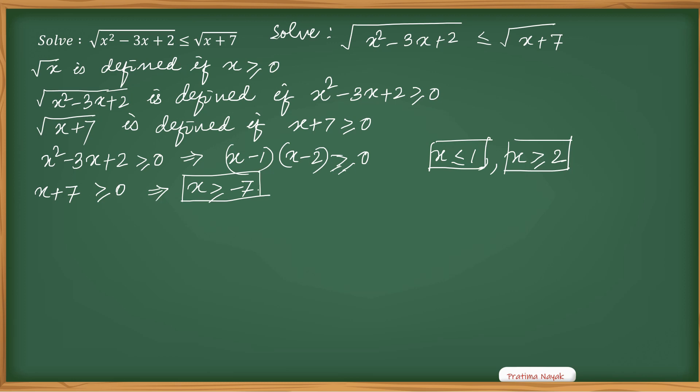Now coming to third - the whole given condition. √(x²-3x+2) ≤ √(x+7). So I will square both sides because both are positive. I have taken the condition. So x²-3x+2 ≤ x+7.